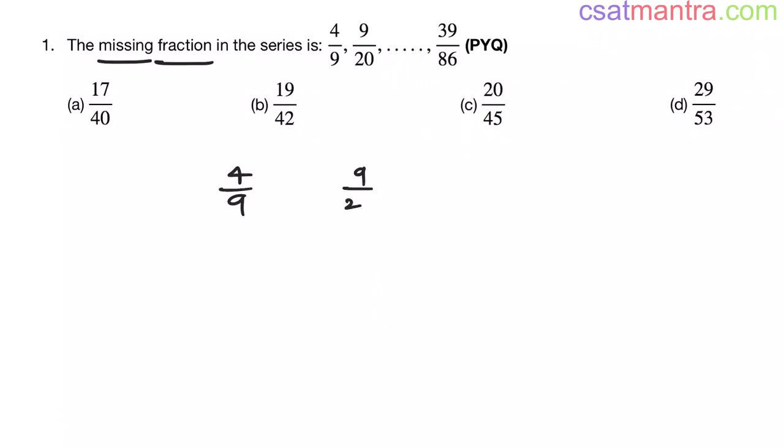We have 4 by 9, 9 by 20, there is a missing term here, and we have 39 by 86. Now let's go through the possibilities. The first thing that will come to your mind is: here 9 is there, so 9 is there. Here 20 is there, so 20 has to be here.